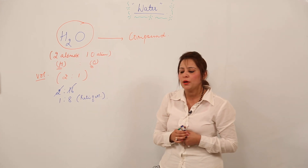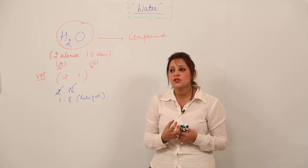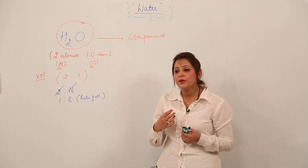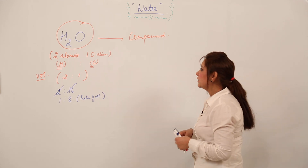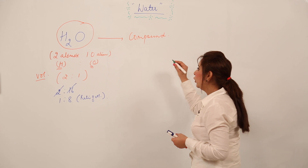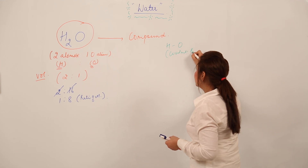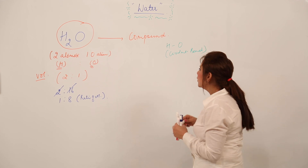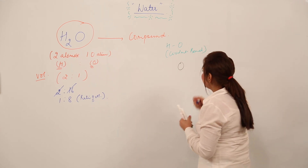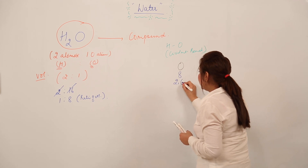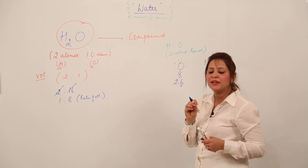Whenever you start any topic in chemistry it is very important to know what the substance actually is, what properties it has, and what its basic structure is. So we are starting with the structure of the water molecule. The bonding is covalent because hydrogen and oxygen are both non-metals, so the bond present in water is a covalent bond. The atomic number of oxygen is 8.